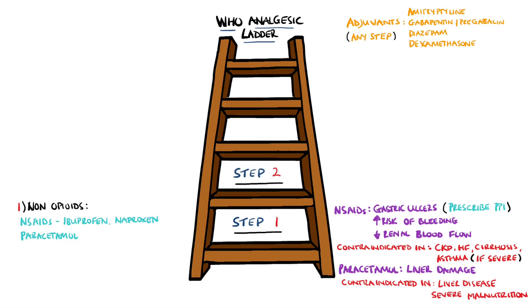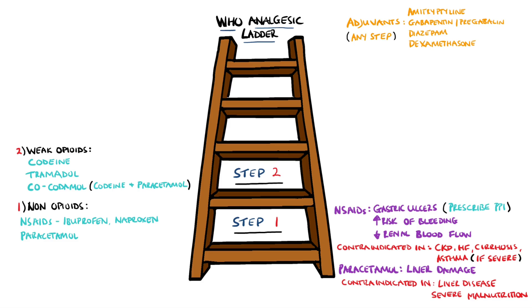The next step up on the ladder is the introduction of a weak opioid. The main examples are codeine and tramadol. Often these are combined with analgesics earlier in the ladder — for example, cocodamol is a combination of codeine and paracetamol. It's important to remember how much patients can have. Typically, patients can have 1 gram of paracetamol every 4 hours, up to a maximum of 4 grams in 24 hours.